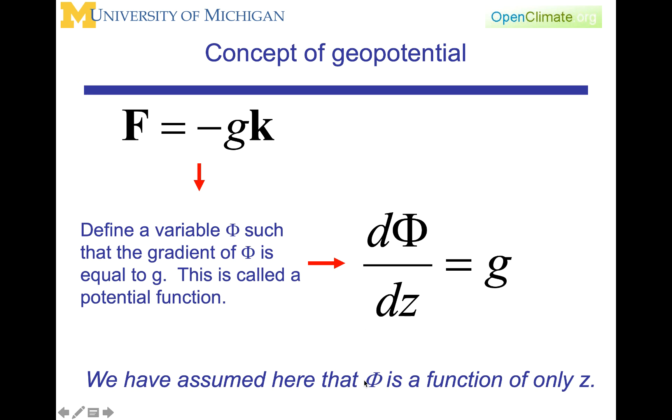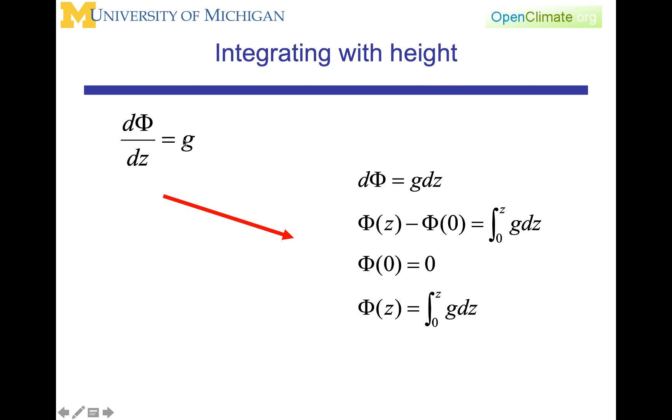We will assume that phi is a function only of z. We're now going to integrate d phi dz with height. Here's the definition, d phi dz equals g. We'll rearrange it to d phi equals g dz. We're going to integrate from zero to z. We will get phi at z minus phi of zero is equal to the integral. Phi at zero, at the ground, is equal to zero. Hence, phi z equals integral of zero to z of g dz.